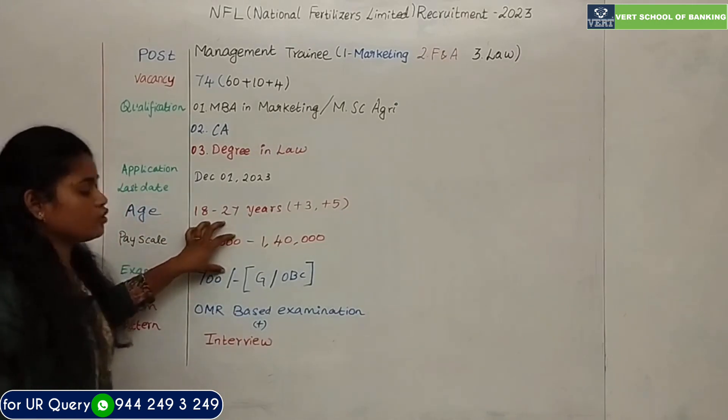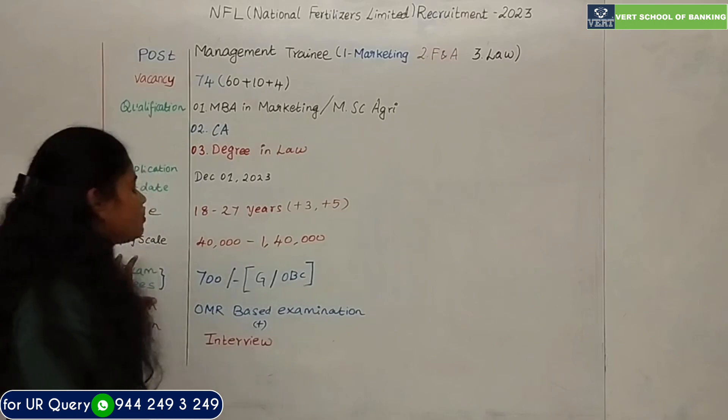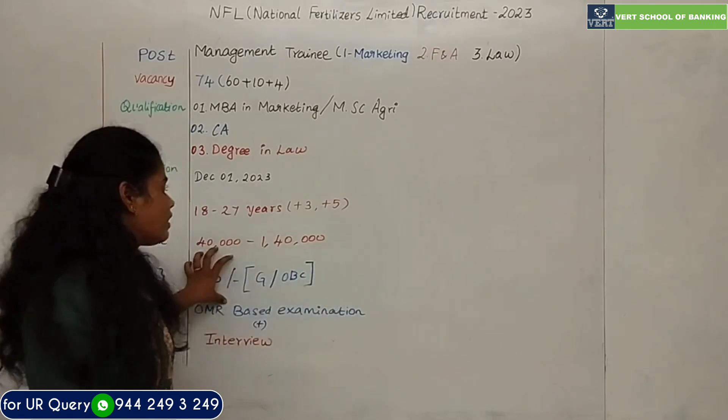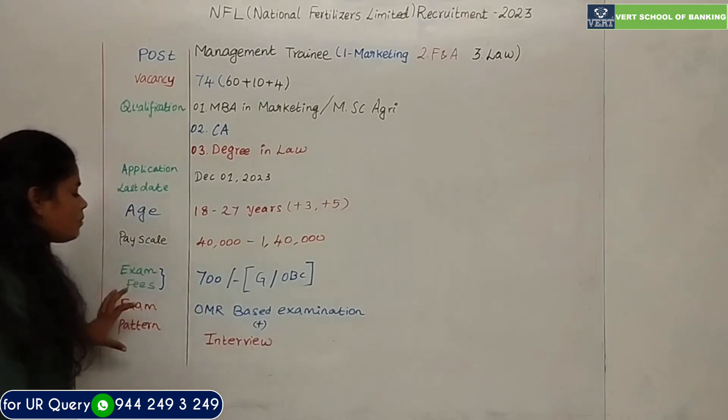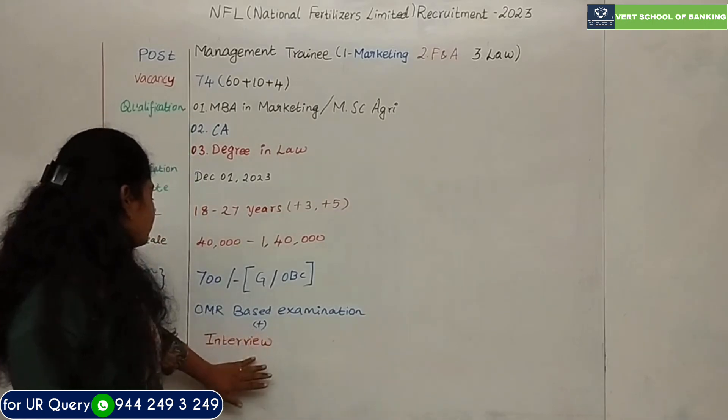Pay scale is 40,000 to 1,40,000. Exam fees: 700 rupees for General and OBC candidates. The exam will be OMR based examination followed by interviews.